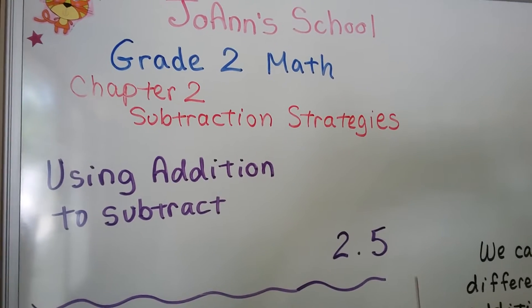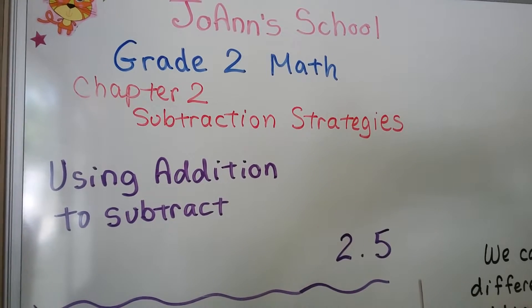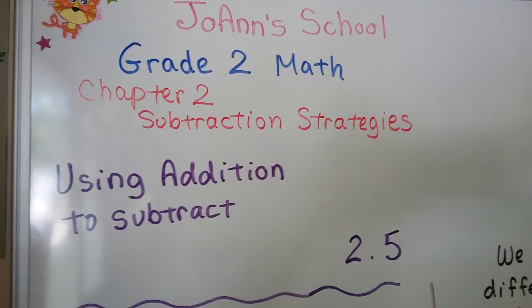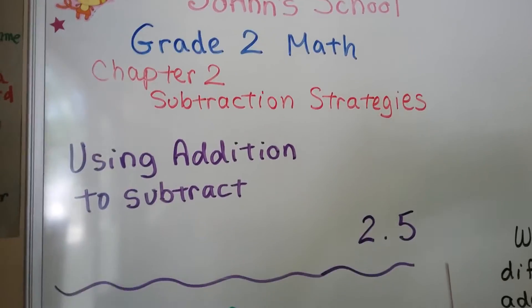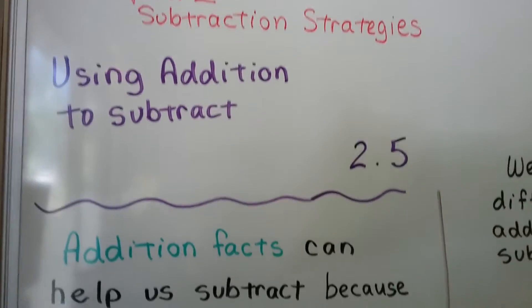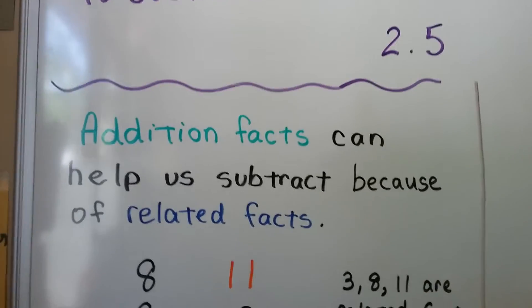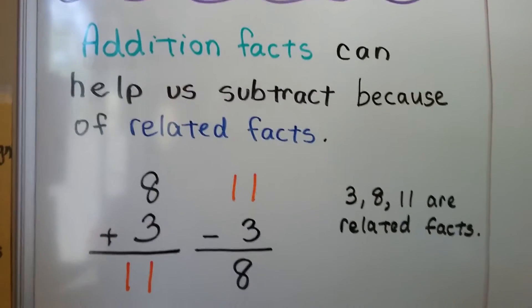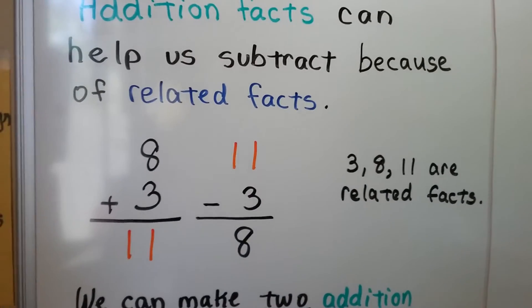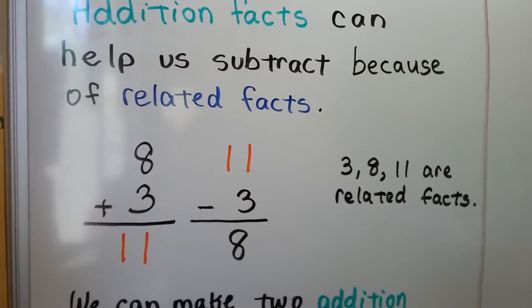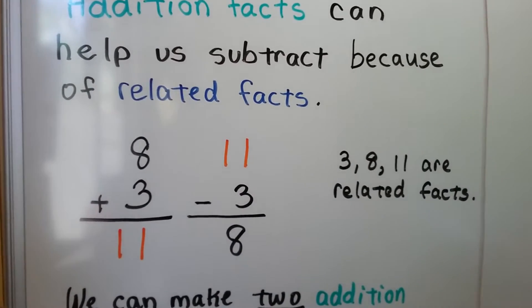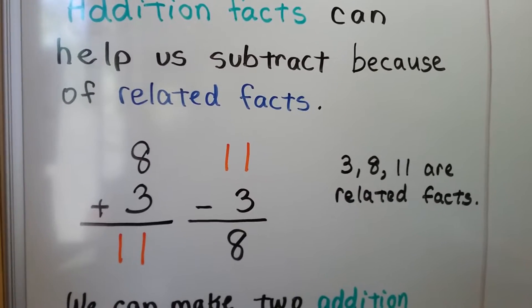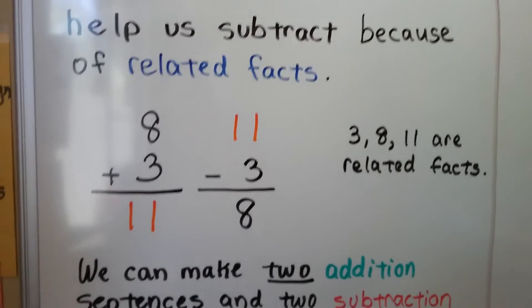We're going to learn how we can use addition to subtract. Lesson 2.5. Addition facts can help us subtract because of related facts. Eight plus three is eleven and eleven minus three equals eight. Three, eight, eleven are related facts.